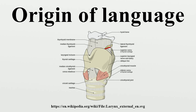Few dispute that Australopithecus probably lacked vocal communication significantly more sophisticated than that of great apes in general, but scholarly opinions vary as to the development since the appearance of Homo some 2.5 million years ago. Some scholars assume the development of primitive language-like systems as early as Homo habilis, while others place the development of symbolic communication only with Homo erectus or with Homo heidelbergensis and the development of language proper with Homo sapiens, currently estimated at less than 200,000 years ago. Using statistical methods to estimate the time required to achieve the current spread and diversity in modern languages, Johanna Nichols, a linguist at the University of California, Berkeley, argued in 1998 that vocal languages must have begun diversifying in our species at least 100,000 years ago.